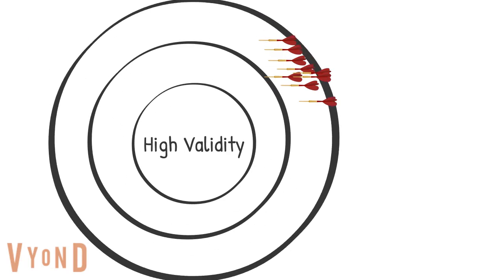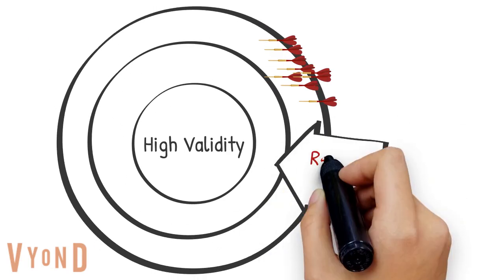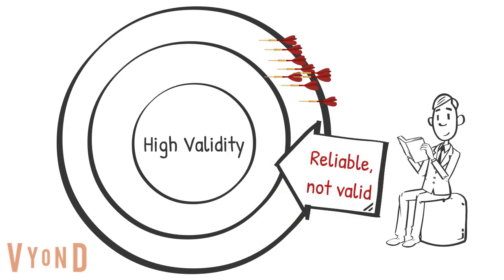Can a test be reliable and not valid? Yes. If a test is reliable and not valid, then it is likely measuring something consistently to get reliable scores. However, since it's not valid, it's not measuring what it should be measuring or what it was designed to measure.